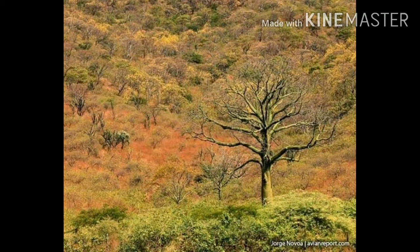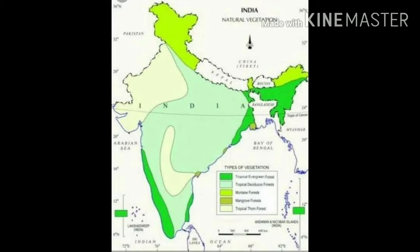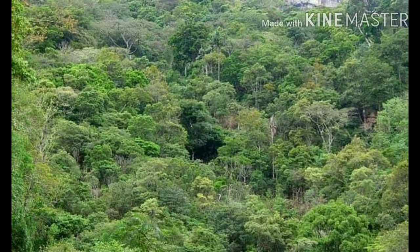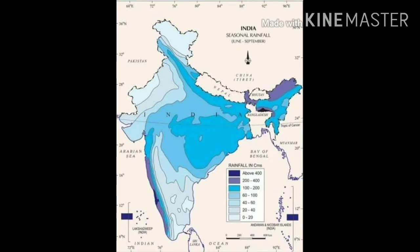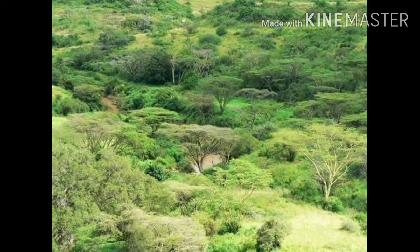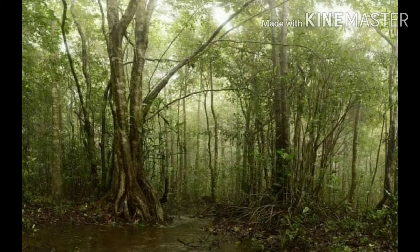The most widespread forests in India are tropical deciduous forests, also known as monsoon forests. These forests are spread over a region that receives rainfall between 200 cm and 70 cm. For about six to eight weeks in dry summer, the trees of monsoon forests shed their leaves. As each tree has its own time of shedding leaves, which is never at the same time for all species, these forests never appear barren at any particular time of year.